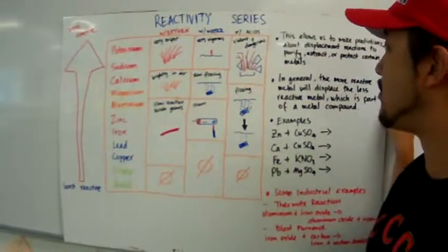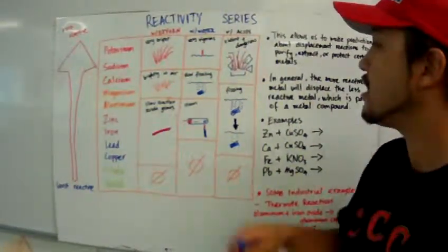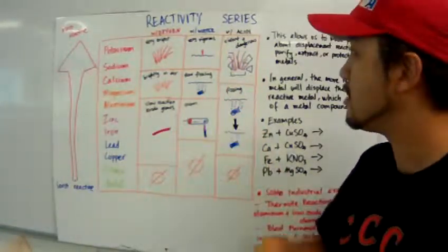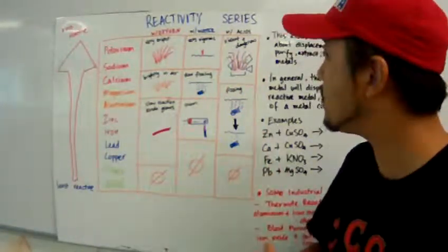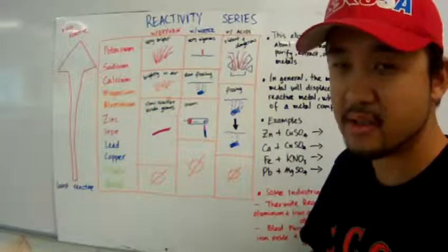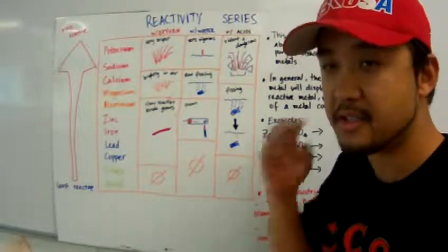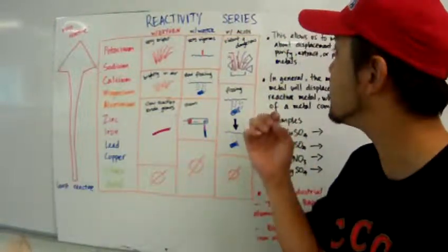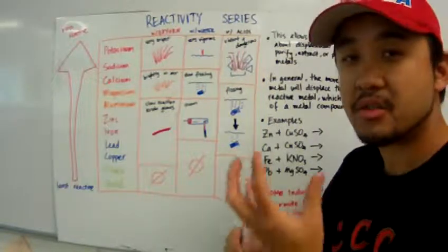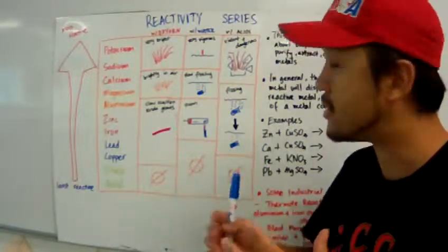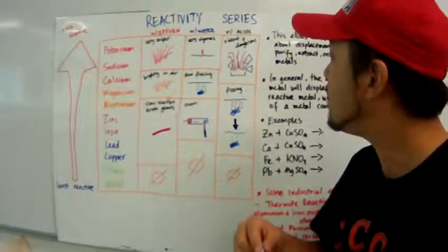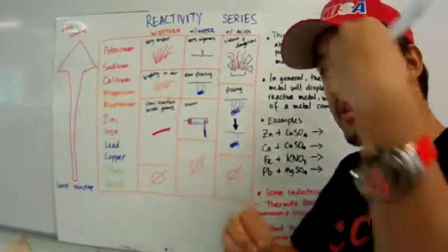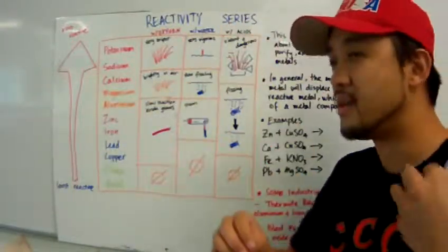And finally, we have reactions with acids. Group 1 and calcium react very violently with acids. And the reason is because acids dissociate into ions. We talked about that in the last lesson. And so, the reaction is very violent,